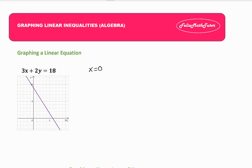When I put it in the equation, I get 3 multiplied by 0 plus 2y equals 18. So this will go, and I will have 2y equals 18, and I will find y equals 9.